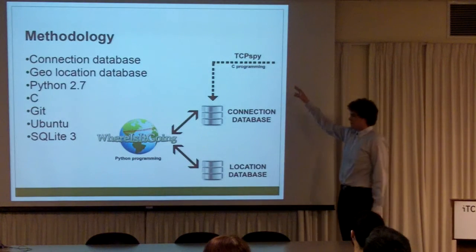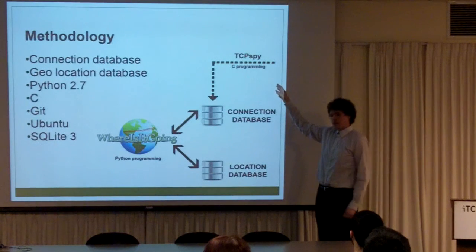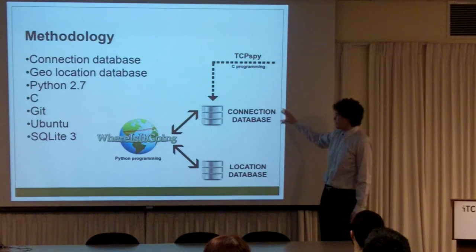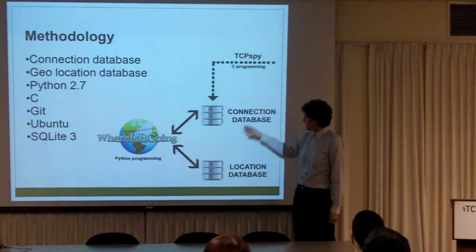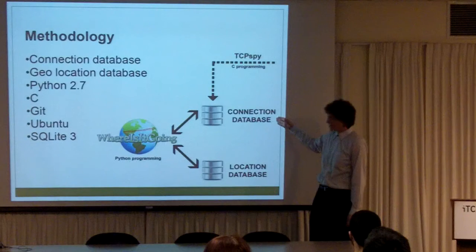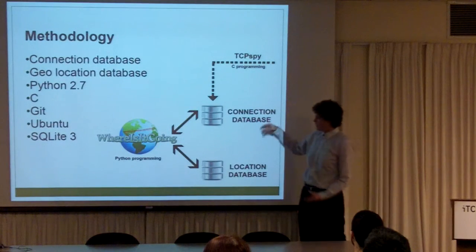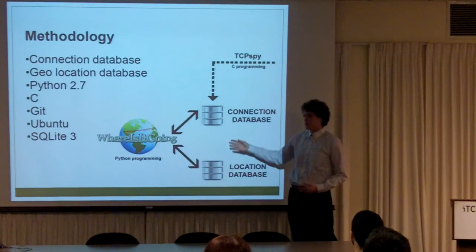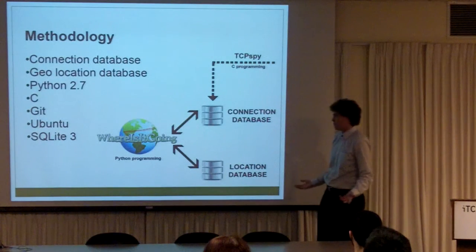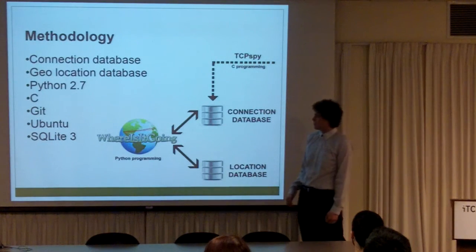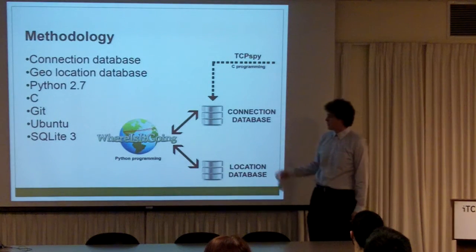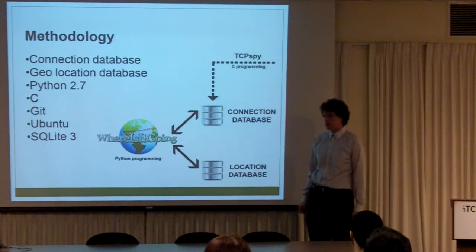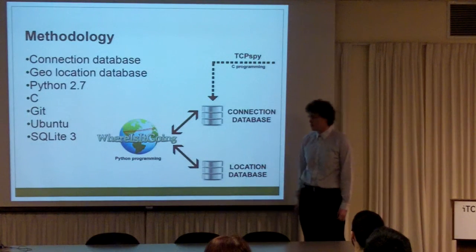TCP-SPY is a C program that runs in the background. It gathers the actual information and funnels it all into a connection database that runs SQLite3. "Where Is It Going?" is the Python frontend that takes information from the connection database and the location database, pulls it together, and creates something that is usable to the user. We used Git for our repository and code management, we both developed on Linux using Ubuntu, and we used SQLite3 for our databases.